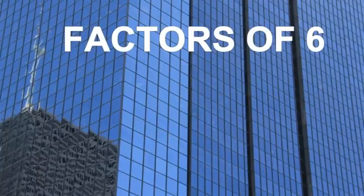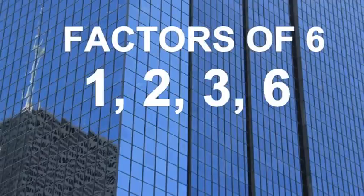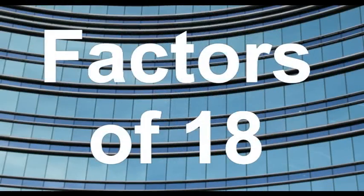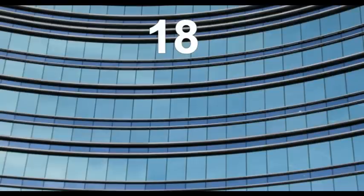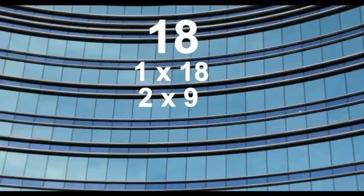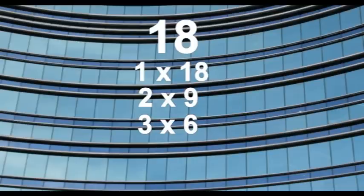A good way to write the factors of 6 would be horizontally across the page: 1, 2, 3, and 6. Now let's find the factors of 18. Remember, 1 is always a factor of a number, so 1 times 18 are 2 factors of 18. Since 18 is an even number, 2 is also a factor. 2 and 9 would be factors of 18. 18 is also a multiple of 3, so 3 times 6 are factors of 18. 4 does not divide into 18 evenly, nor does 5. Therefore, 1, 2, 3, 6, 9, and 18 are the factors of 18.